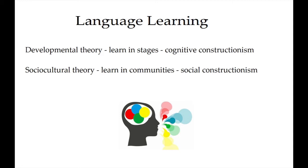Language learning is at the heart of literacy, so effective teaching requires understanding from different perspectives. Here are two fundamental theories which differ on how they conceive the learning process but have both improved educational approaches. Developmental theory is that we learn in stages through cognitive constructionism — it sees learners in an active role and has contributed to a more student-focused approach. Whereas sociocultural theory is that we learn in communities through social constructivism, and sees language as a shared resource between competent users who support learners to incrementally internalise it. This theory has led to a more collaborative and socially interactive approach.